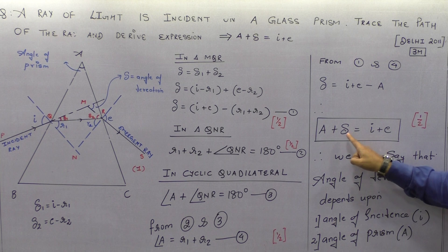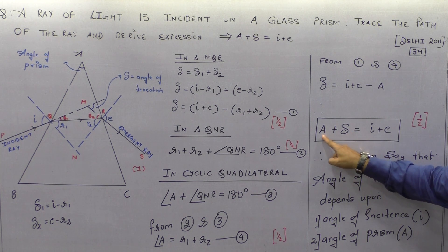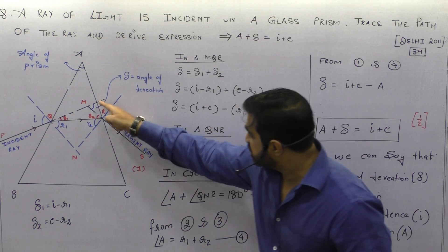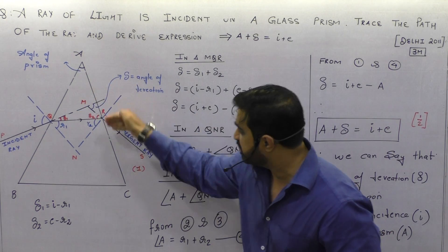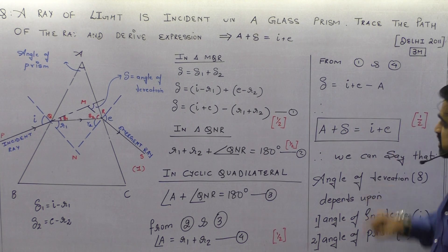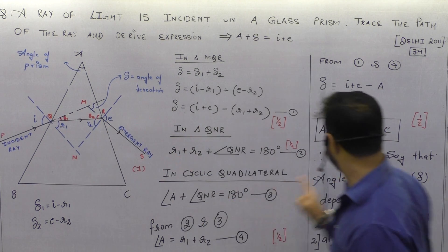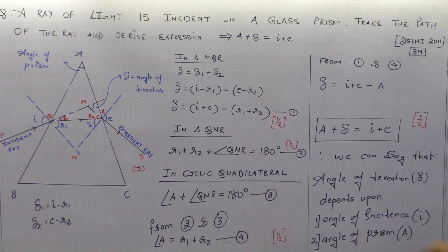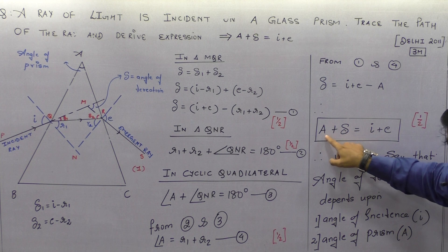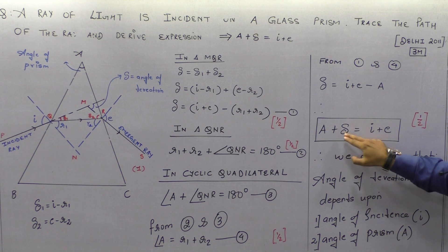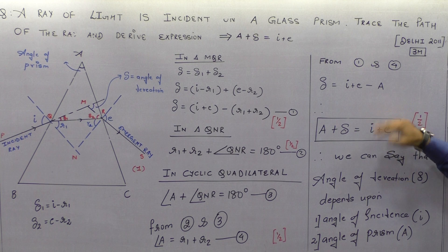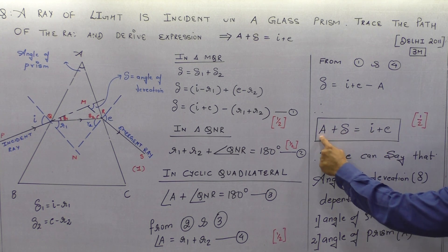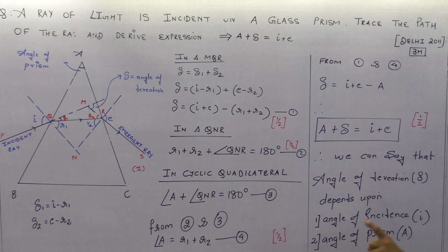From this result, A is the angle of the prism, delta is the angle of deviation, i is the angle of incidence, and e is the angle of emergence. The angle of deviation depends on the angle of incidence i, on the angle of prism A, and on the material of the prism, that is, on mu.